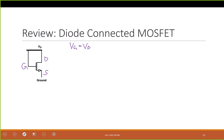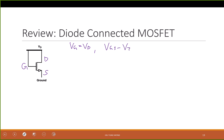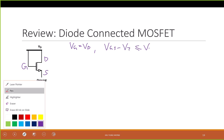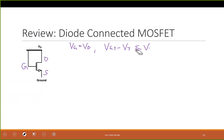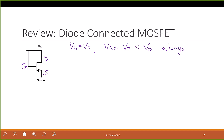Very good. Vg equals Vd. So as a result, Vgs minus Vt must be smaller than Vd. So always, always in saturation. That's the first thing.